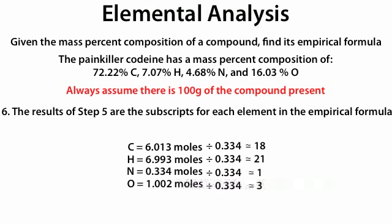Step 6: the results of step 5 are the subscripts for each element in the empirical formula. We take the results for C, H, N, and O and place them as subscripts next to each element. In this case we get C₁₈H₂₁N₁O₃, which is our empirical formula and final answer.